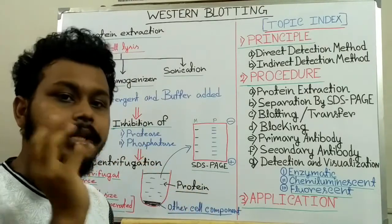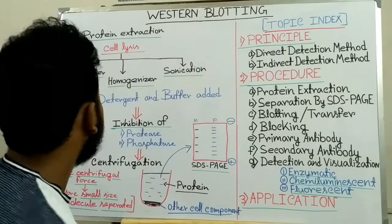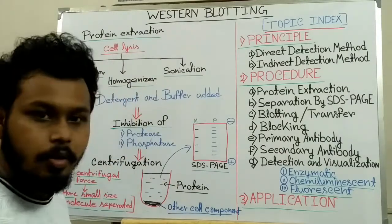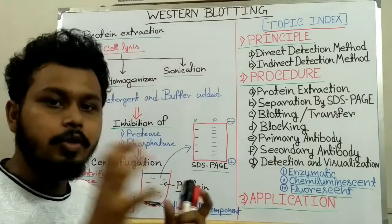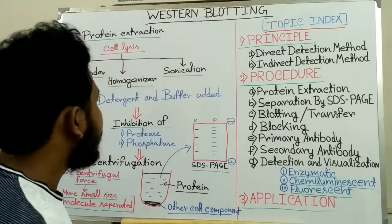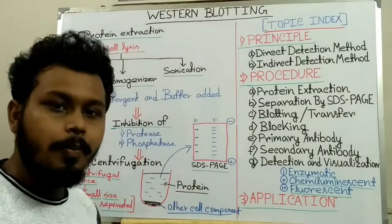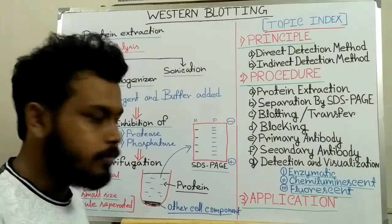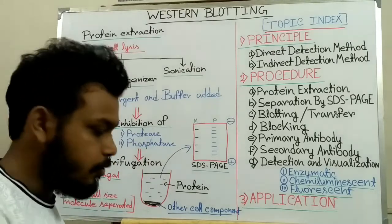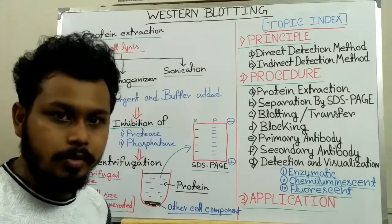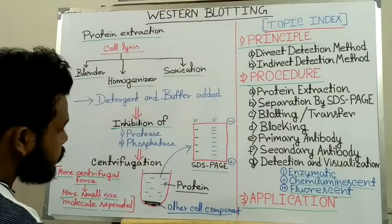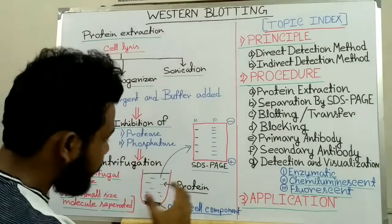We lyse the cell so that all components containing proteins come into solution. Cell lysis is done by a blender, homogenizer, or sonication. Detergent and buffer are also added to the cell suspension to increase the cell lysis process. After cell lysis, all the cell components containing proteins come into solution. Then we have to inhibit protease and phosphatase activity, which can cleave or degrade the protein molecules.